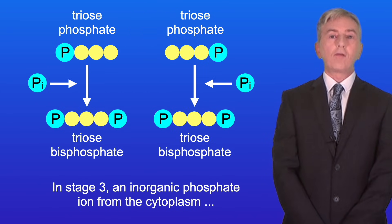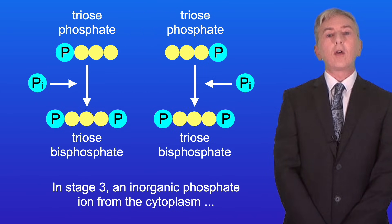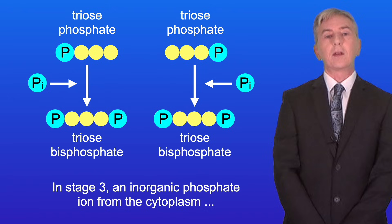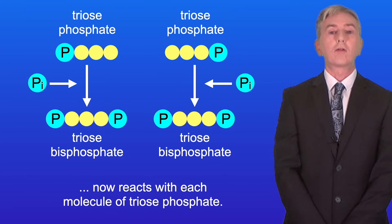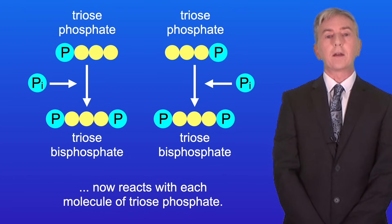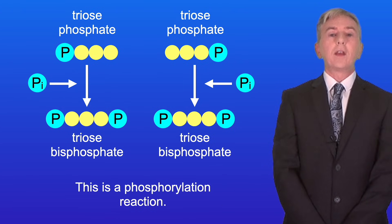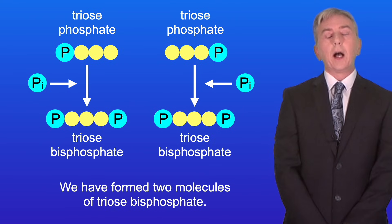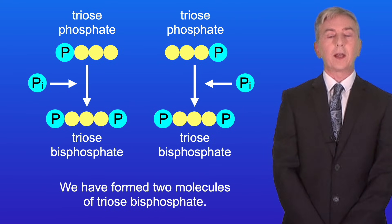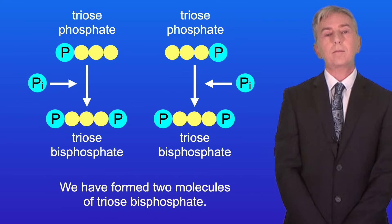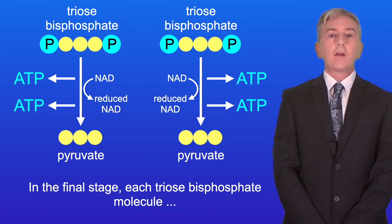In stage 3, an inorganic phosphate ion from the cytoplasm now reacts with each molecule of triose phosphate. This is a phosphorylation reaction, and we've formed two molecules of triose bisphosphate.